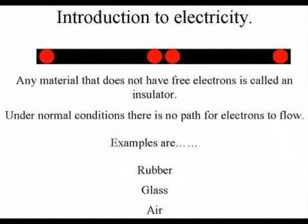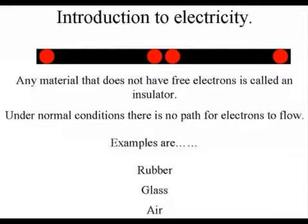The opposite of a good conductor is an insulator. An insulator is any material that does not have a good path, or it doesn't conduct the flow of electrons very well. They do not have a lot of free electrons present to allow that flow. Some good examples of insulators are rubber, glass, and air.